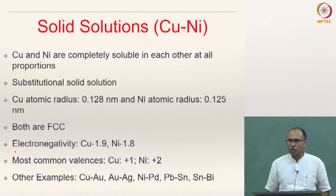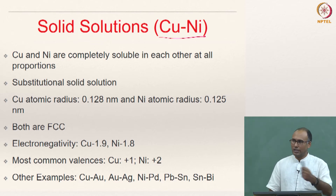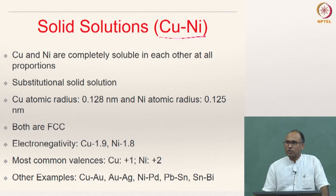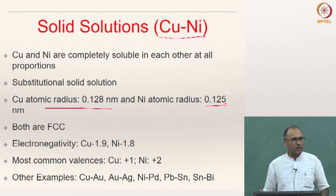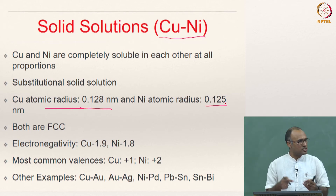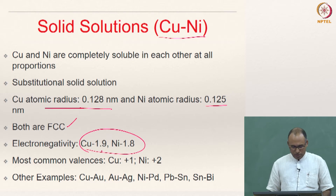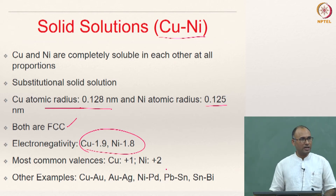A very good example of a substitutional solid solution is the copper-nickel system. Copper and nickel are completely soluble in each other at all proportions. The copper atom radius is 0.128 nm and the nickel atom radius is also 0.128 nm — they are very close. Both are FCC and their electronegativity values are also very close: 1.9 and 1.8. Hence they form a very good substitutional solid solution with nearly 100% solubility in each other.